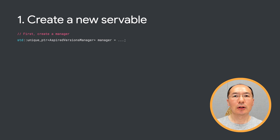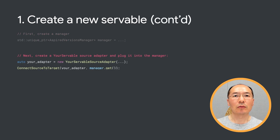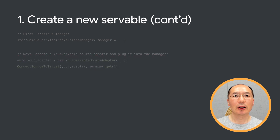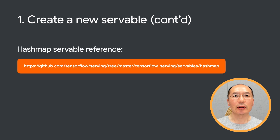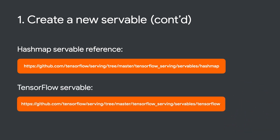Let's walk through some code. The first step is to create a new servable. To do that, we first create a new aspired version manager. Next, we create a new source adapter and plug it into the manager. After that, create a simple path source, which specifies the path of your servable files, and plug the path source into your adapter. We can take a look at our HashMap servable example to see how this is done. Also, the TensorFlow servable is a good reference.